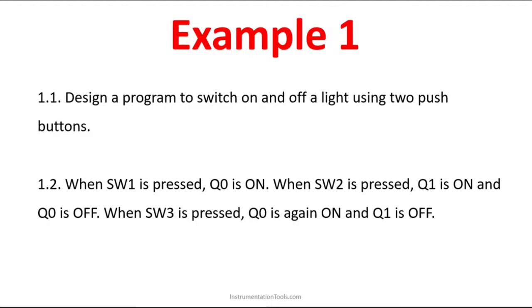Here we are having two inputs because they are asking us to use two push buttons — one for on and one for off. So two push buttons means two inputs, and we have only one output which is the light. Let's see how to do this in the Omron PLC.